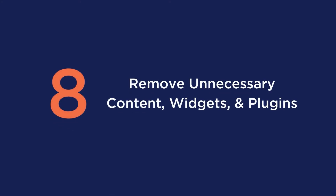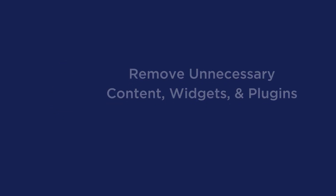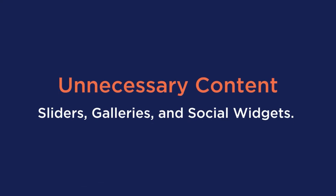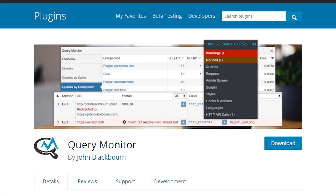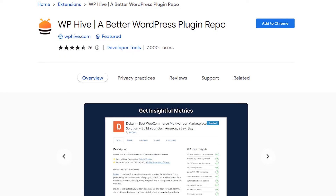Tip number eight is to remove unnecessary content, widgets, and plugins. This will help reduce the page's size and therefore reduce the network payload. Examples of content you can reduce include the number of sliders, galleries, and social widgets. If you're unsure what resources might be slowing down your site, you can use plugins like Query Monitor and WP Hive to identify those resources.